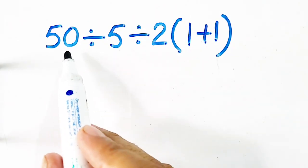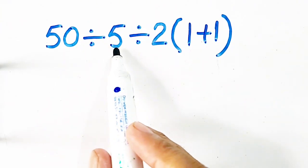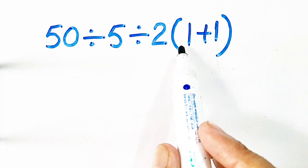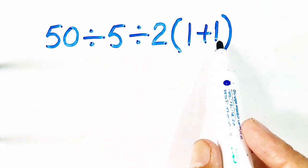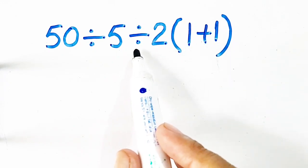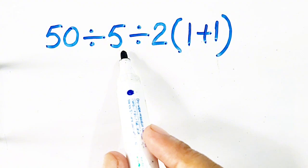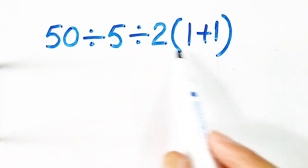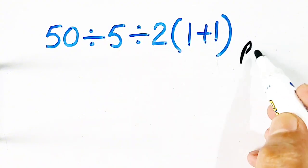Hello, in this video we will solve 50 divided by 5 divided by 2 times 1 plus 1. Let us solve it. We have to obey order of operations by using PEMDAS rule.